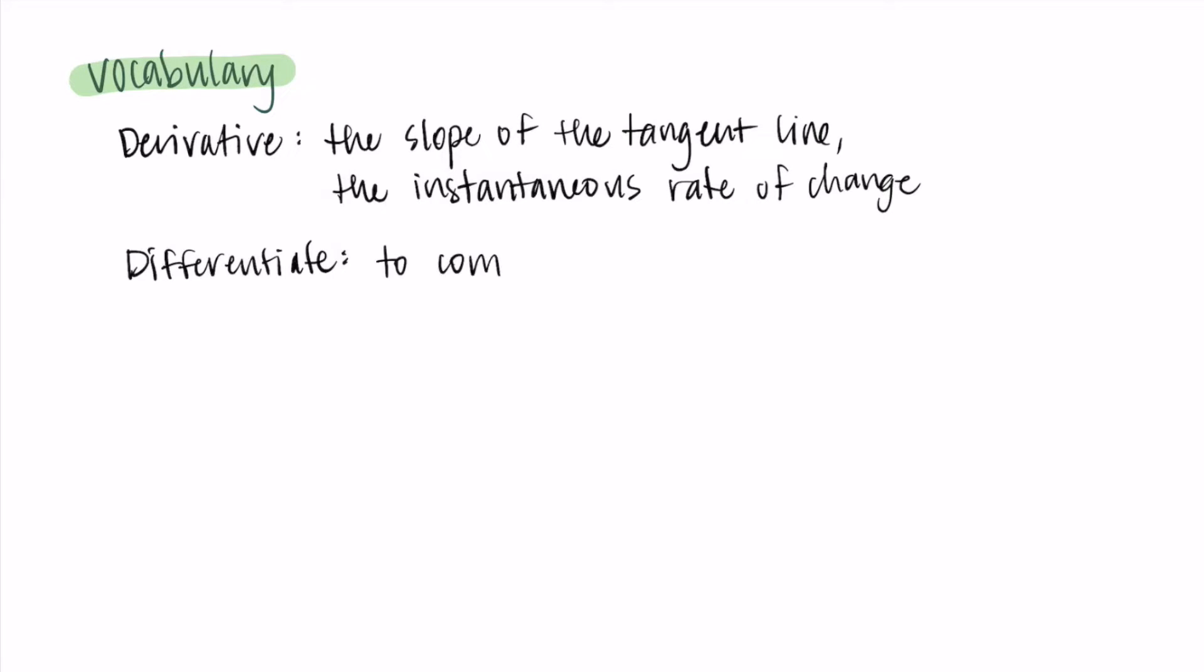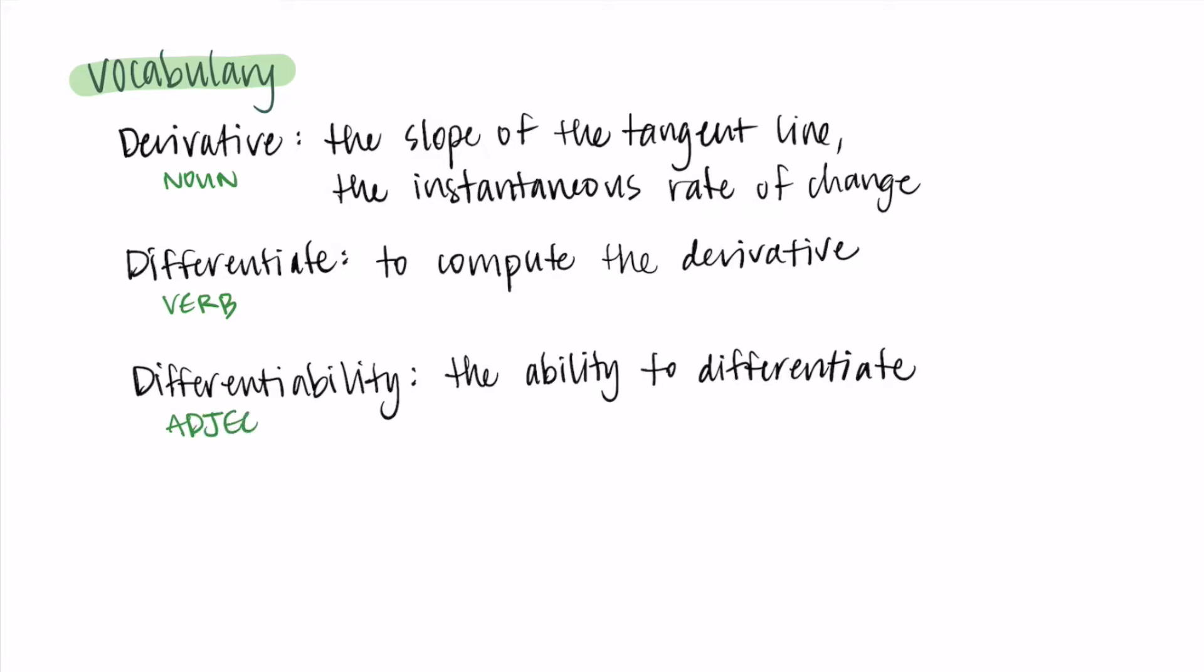Next we have differentiate, which means to compute the derivative. So to get the derivative, to find the derivative, differentiate. Derivative is a noun, an object, and differentiate is a verb, a thing we do. Then last we have differentiability. This is just the ability to differentiate or the ability to take a derivative.